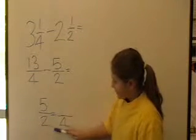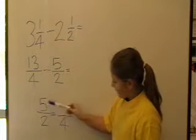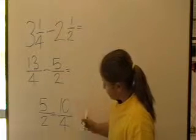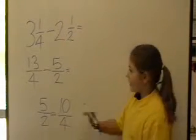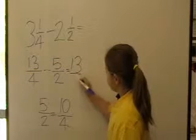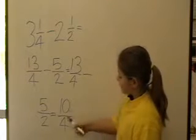What we did to 2 to get 4, we times it by 2. So now we go 5 times 2 which equals 10. So now our new sum is 13 on 4 take away our new fraction 10 on 4.